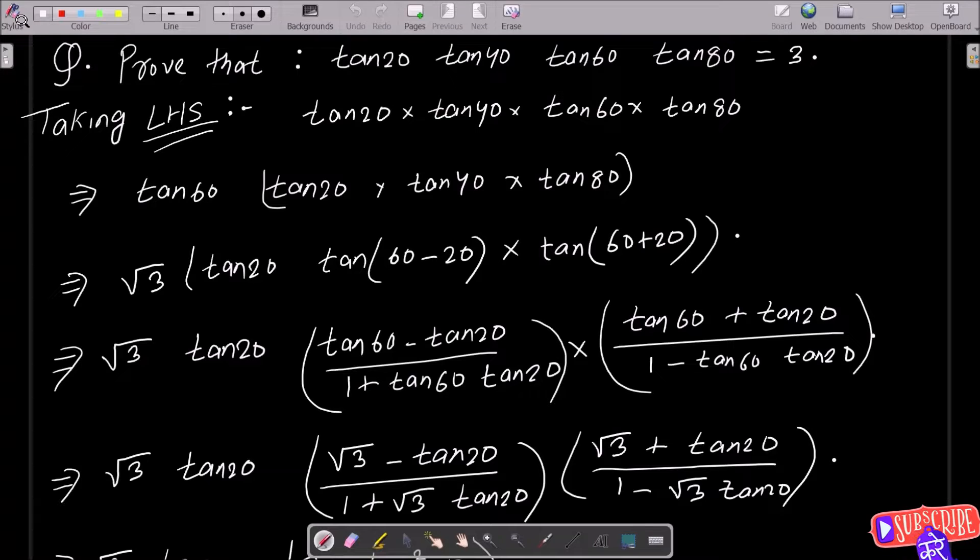Welcome. In this video lecture, I am going to prove that tan20° tan40° tan60° tan80° equals 3. Taking the LHS, we can easily achieve the output if I use this way. Here we already know...